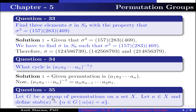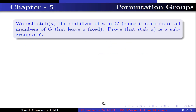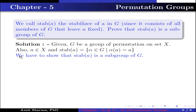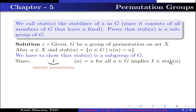Question number 35: Let G be a group of permutations on a set X. Let A belong to X and define the stabilizer of A as Stab(A) = {alpha in G : alpha(A) = A}. We call Stab(A) the stabilizer of A in G, since it consists of all members of G that leave A fixed. We need to prove that Stab(A) is a subgroup of G. Since the identity permutation I satisfies I(A) = A, I belongs to G, so I belongs to Stab(A), which means Stab(A) is non-empty.